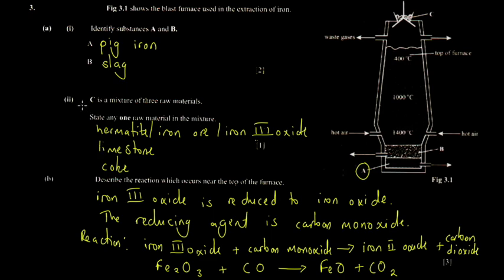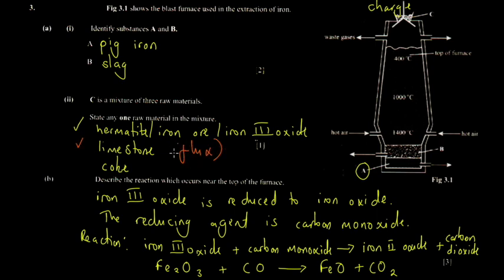Item two asks about C, which is a mixture of three raw materials - this is called the charge. The first raw material is hematite, which is iron ore, or iron(III) oxide - this is the source of iron. The second is limestone, which acts as a flux. The third is coke, which is the reducing agent, added to remove the oxide part.